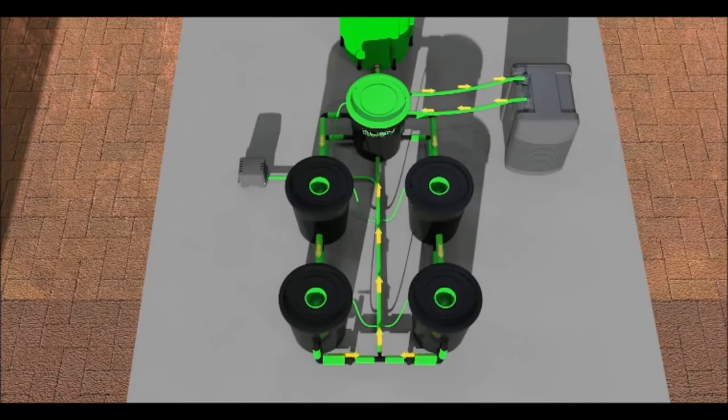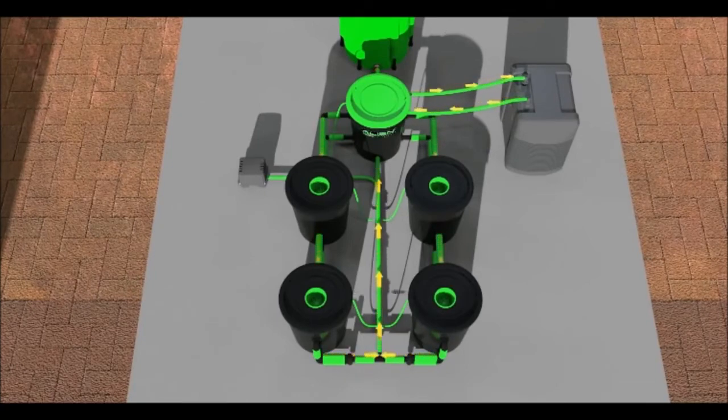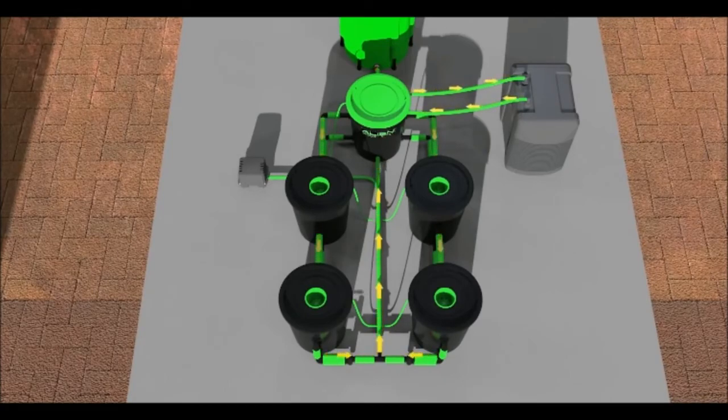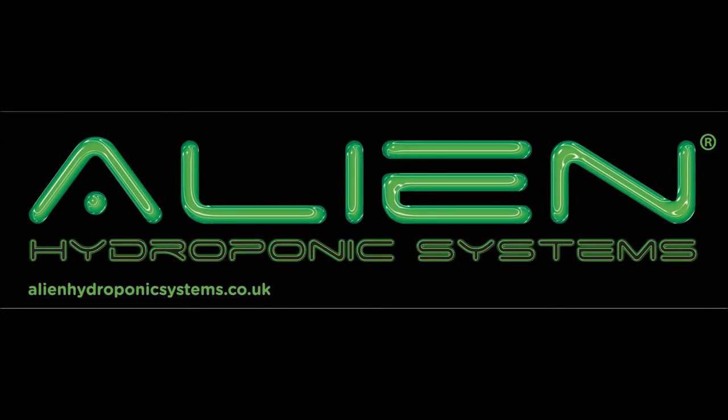Simply adding H2O2 solution to a system full of clean water and letting it recirculate overnight will clean and sterilize the system between crops. Thank you for watching and please visit our website alienhydroponics.co.uk for further information.